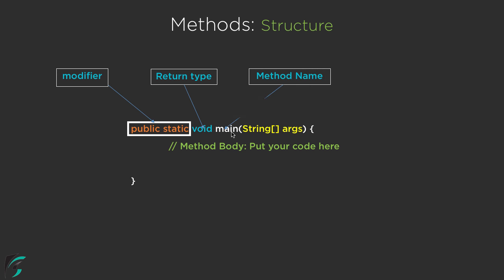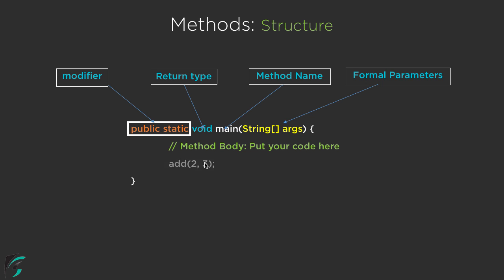Now this main is actually the user defined method — it is the name of the method that we are dealing with. And this string array args is actually the formal parameters of this main method. So this is all about the structure of the methods in Java. Now from inside this main method we can also call a separate method, such as an add method to add these two numbers 2 and 3. Now this method can be defined like this: private static int add(int a, int b).